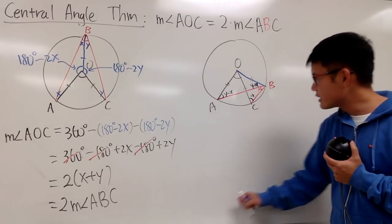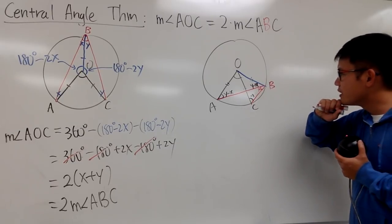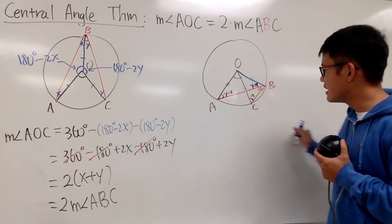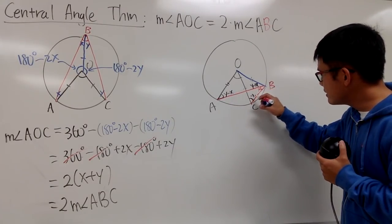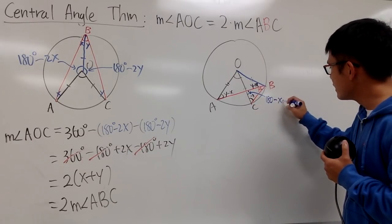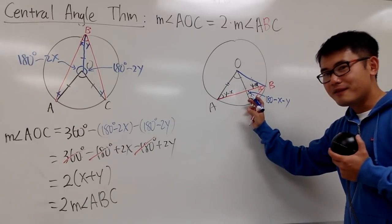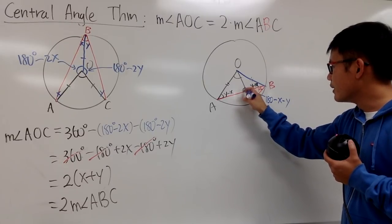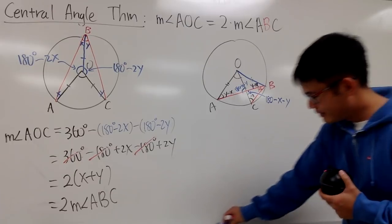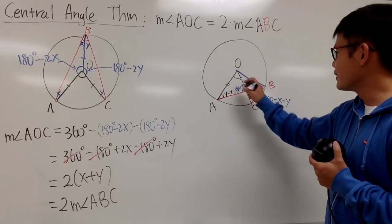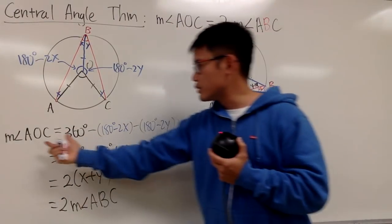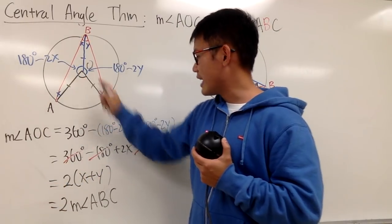Now let's see what else we can do. This is angle AOC. I want to find it. Looking at the angles at point B where the lines cross, we have angle X and Y. The small angle there is 180 degrees minus X minus Y. By vertical angles, because those two angles are vertical, this angle on the other side is also 180 minus X minus Y.